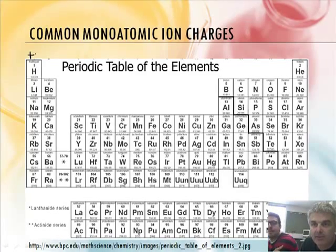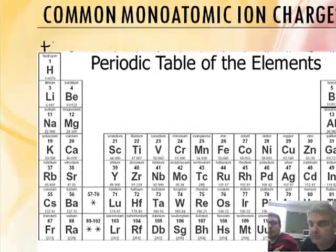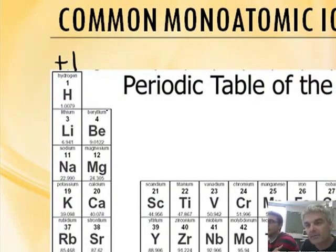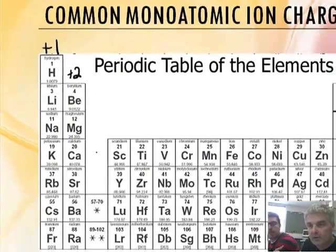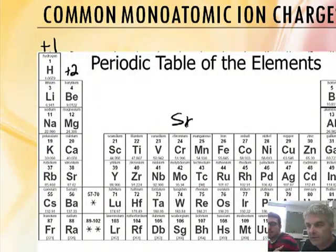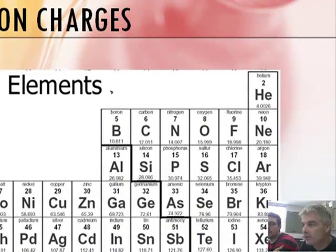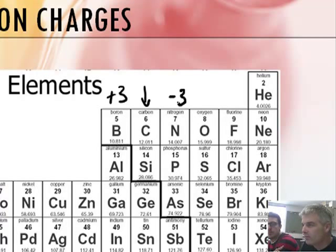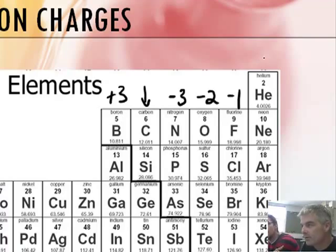In the first column, write plus one. That seems to make sense. Then plus two for column two. And what are we going to do with these middle areas? We're just going to skip them. Over here, plus three. We're not going to put anything in that one — leave it blank. Then minus three, minus two, minus one.